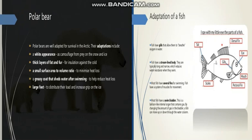The third adaptation is a small surface area to volume ratio to minimize heat loss. Their surface area is very small, so they can store heat and heat loss is very minimal.